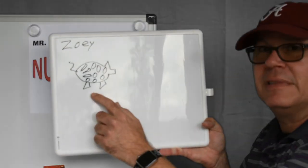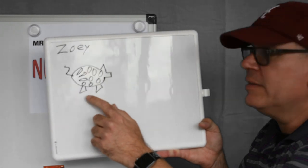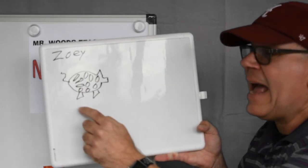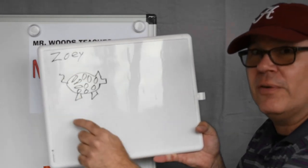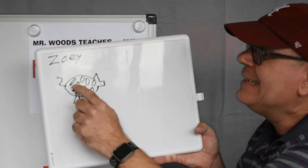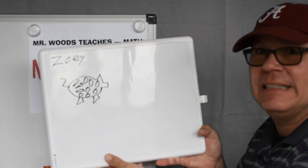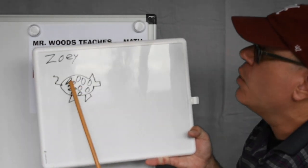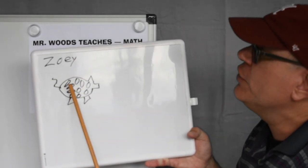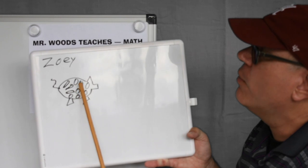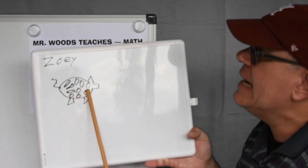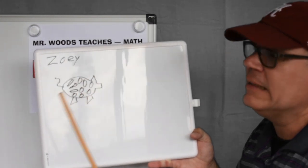Okay, let's take a look at this. So Zoe had ten nickels. Let's count them. One, two, three, four, five, six, seven, eight, nine, ten.